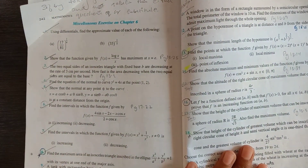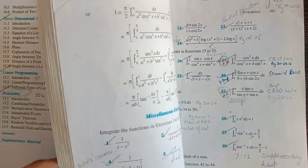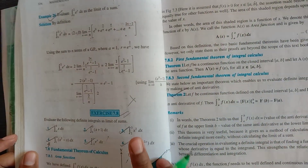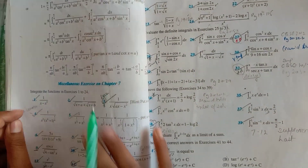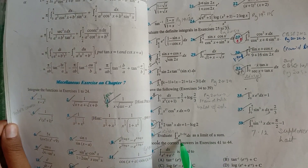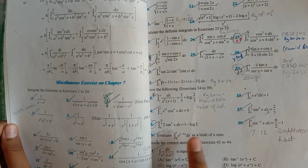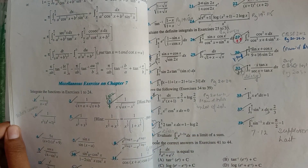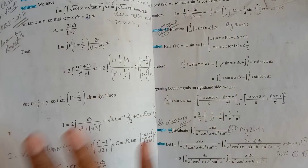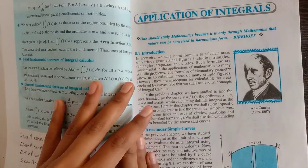तो यह हमारा complete हो गया। अब हम second book में mark कर लेते हैं। Second book में पहला chapter हमारा Integrals है — इसमें सारी चीज़ें तुम लोगों को करनी हैं। बस सीधे 7.8 exercise पे आ जाओ — 7.8 तुम लोगों को नहीं करनी है, which is limit of sum के form में represent करना। इसके अलावा जितनी exercises हैं, सब करने हैं। Miscellaneous में भी limit of sum वाला question नहीं करना — और जब limit of sum के form में represent कर रहे हो, बस वो नहीं करना है। But इसको solve करना — यह question आ सकता है। तो सिर्फ limit of sum एक special method है — बस वो ही नहीं करनी है। बाकी यहाँ पे सारे ही questions हैं।